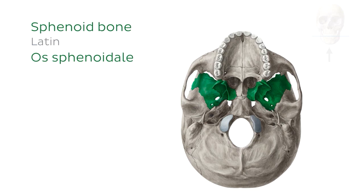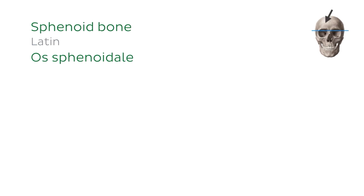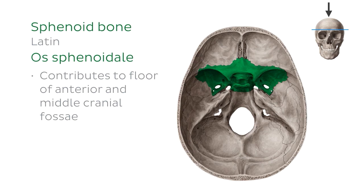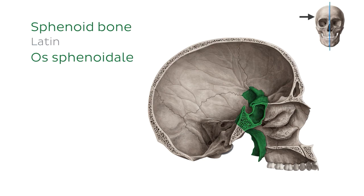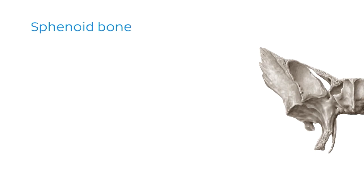We're looking at the skull from an anterior view. The teeth of the upper jaw, which we can see here, are at the anterior aspect, and all the parts highlighted in green are part of the sphenoid bone. From an internal aspect, the sphenoid bone contributes to the floor of both the anterior and middle cranial fossae. In this image, we're looking at the skull from a superior view where the calvaria, or the skull cap, has been removed. And in this sagittal section of the skull, we can see the left half of the sphenoid bone highlighted in green. All these images show us how far the sphenoid bone reaches in all directions.